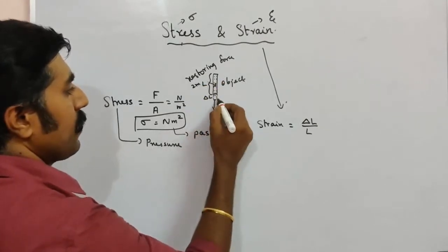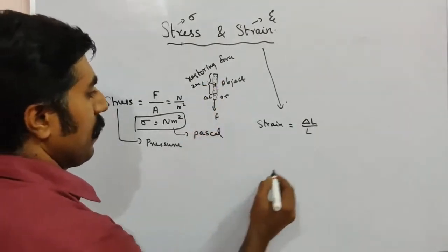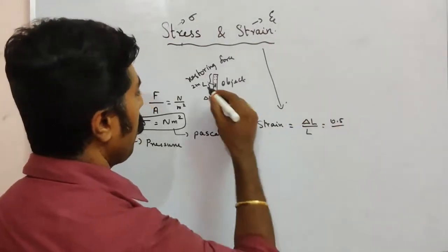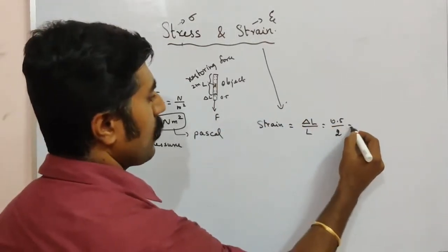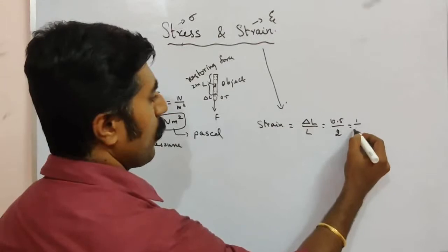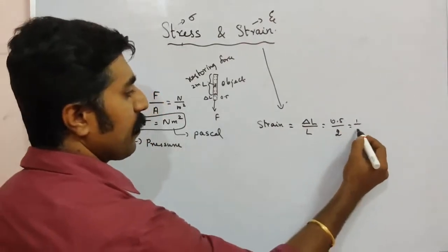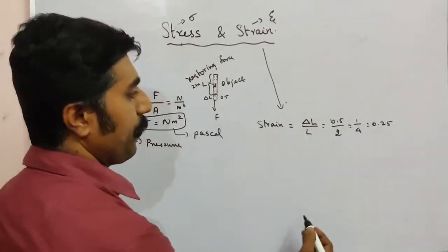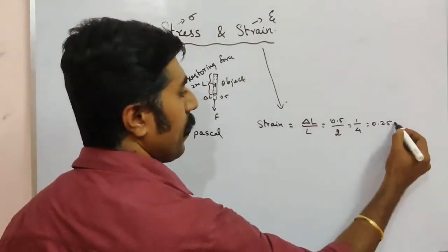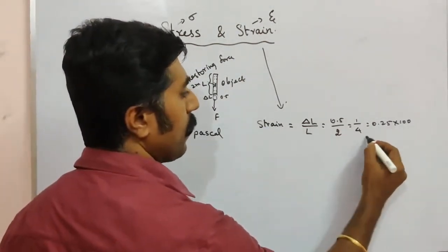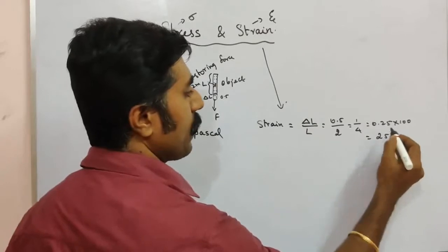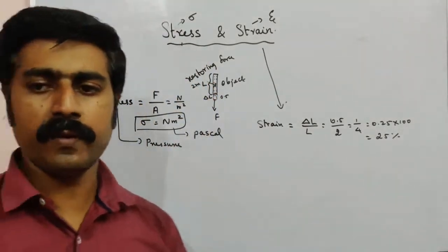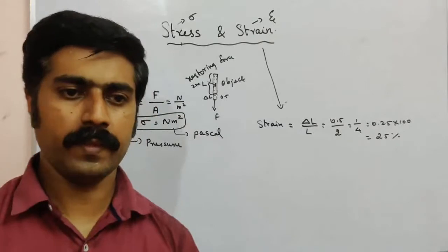For example, if the original size is 2 meters and the change in size is 0.5 meters, then strain equals 0.5 divided by 2, which is 0.25. As a percentage, that is 25%.